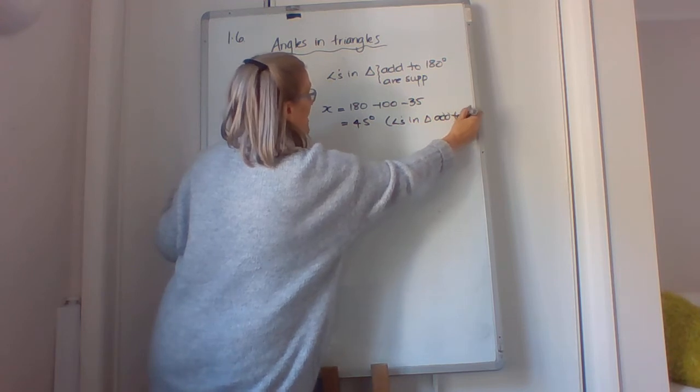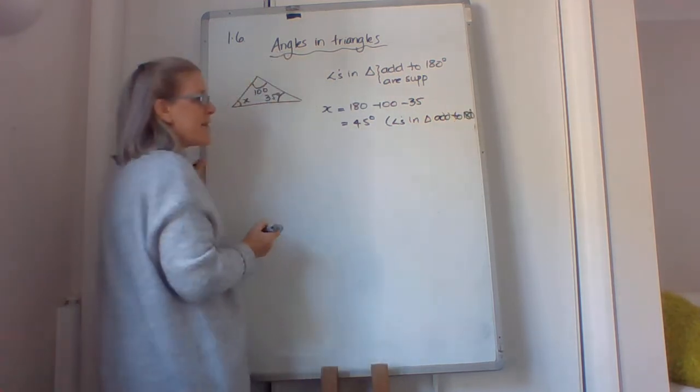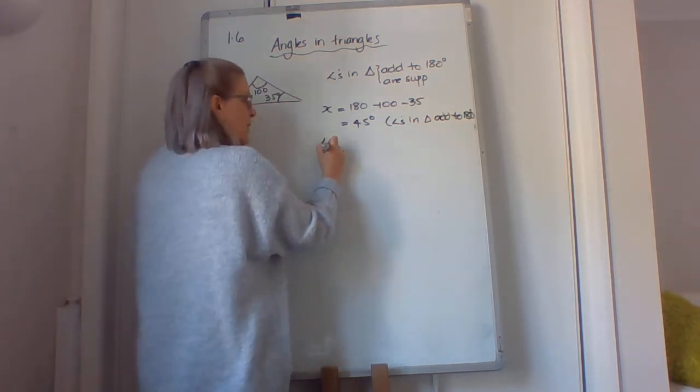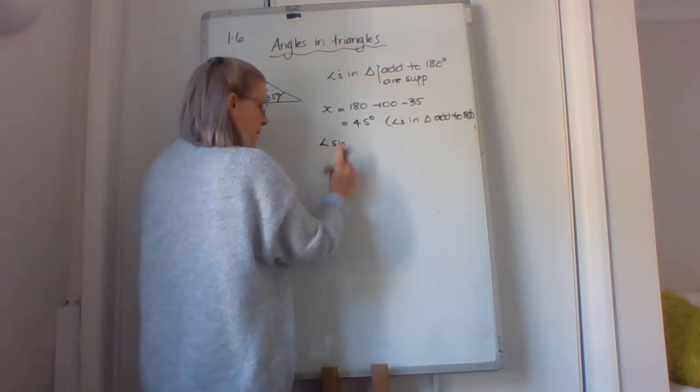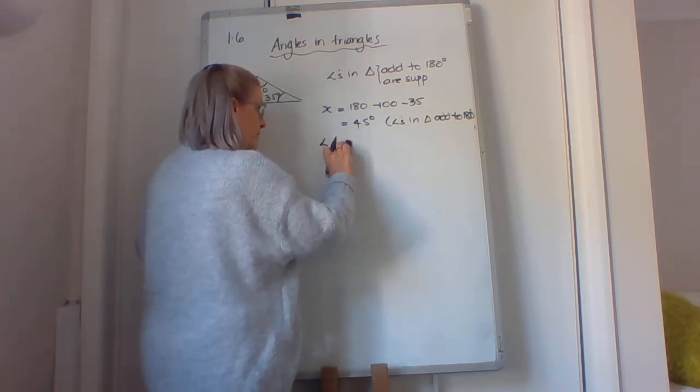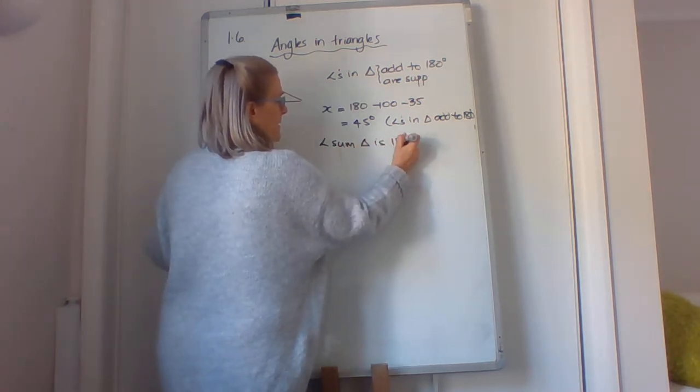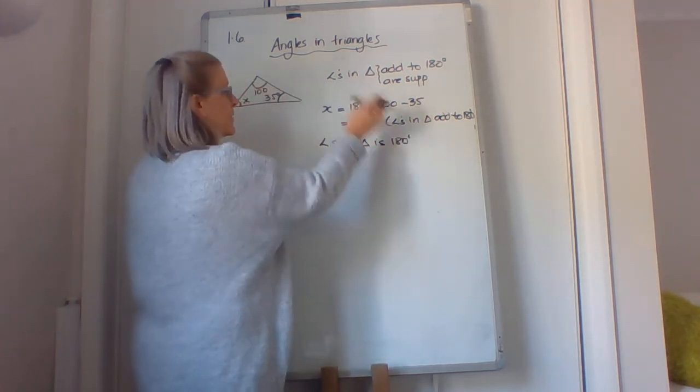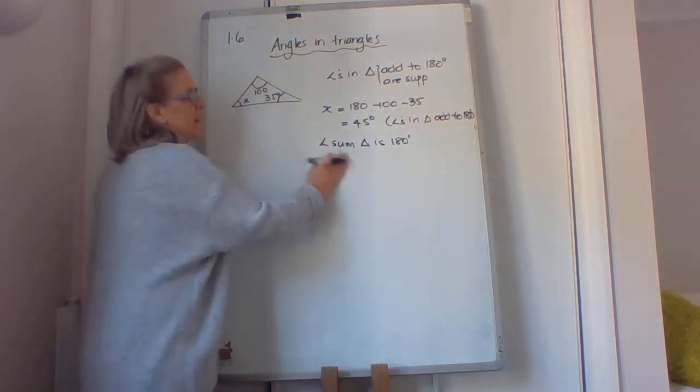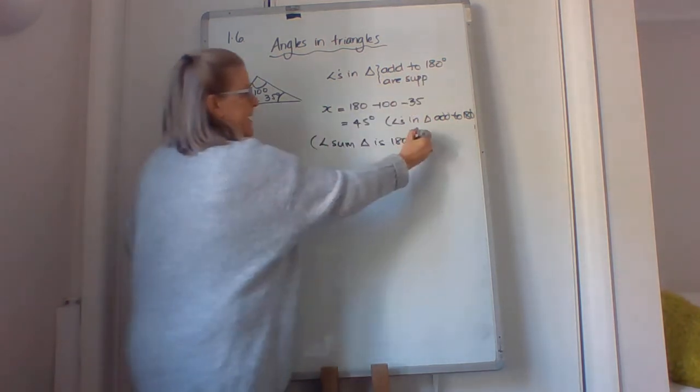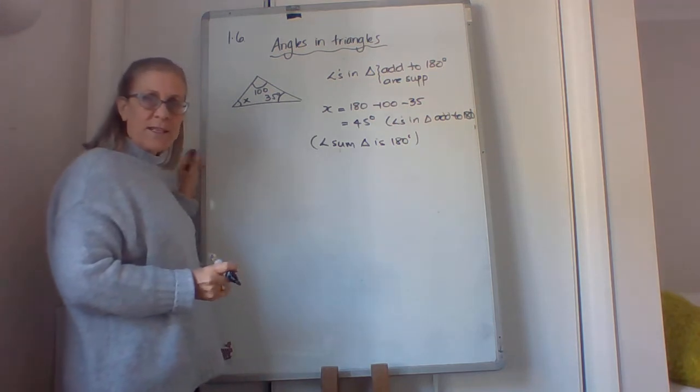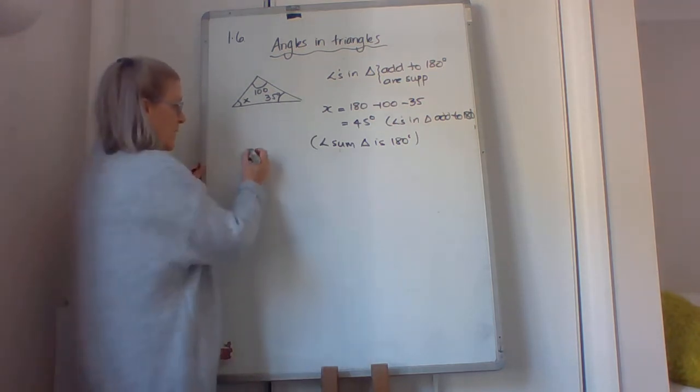Angles in a triangle add to 180. There's another way of writing this some of you will have learned, and that is the angle sum of a triangle is 180. So the angle sum is 180, or they add up to 180. They're both quite correct. That's another alternative way of writing the reason for this.